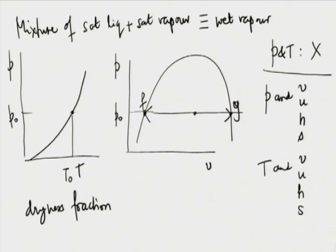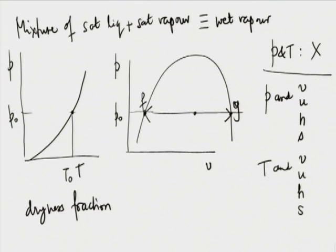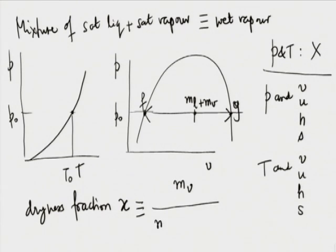The dryness fraction is introduced as follows: the vapour has mass Mg, the liquid has mass Mf, so the total system mass is Mf plus Mg. The dryness fraction, symbol x, is defined as mass of vapour divided by the total mass of the system. It is dimensionless and goes from 0 to 1.